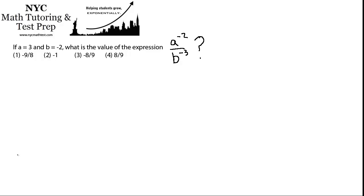In this problem we're being asked to find, if a equals 3 and b equals negative 2, what is the value of the expression a to the negative 2 over b to the negative 3?